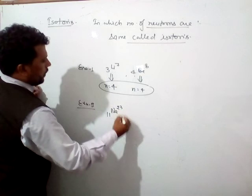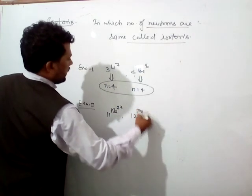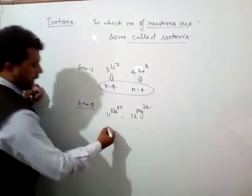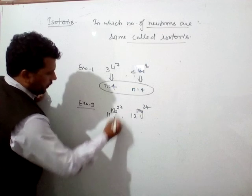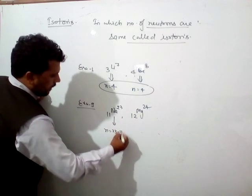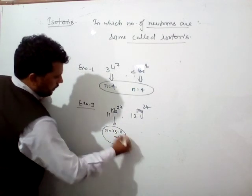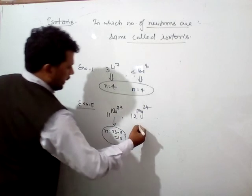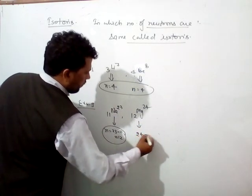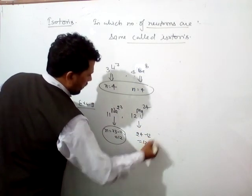11Na23, 12Mg24. So in here, number of neutrons: 23 minus 11, that is 12. And in here also, number of neutrons: 24 minus 12, that is 12.